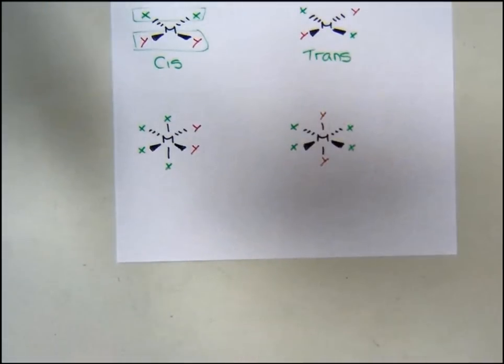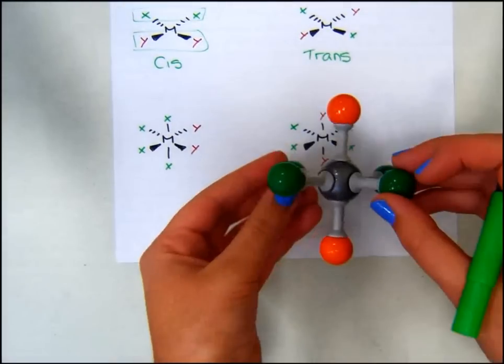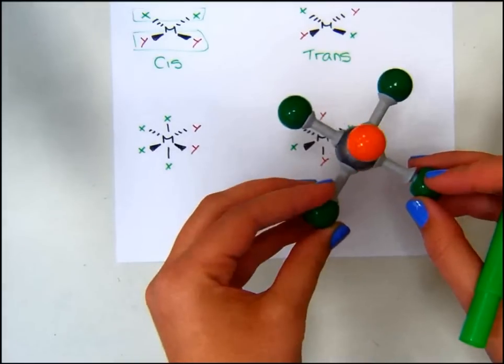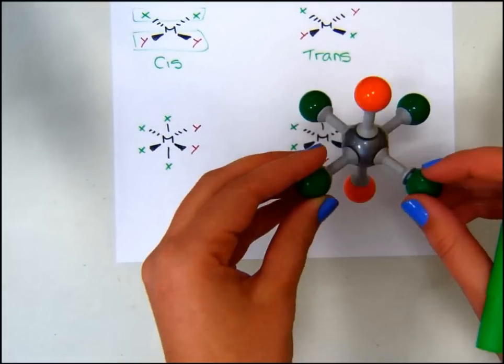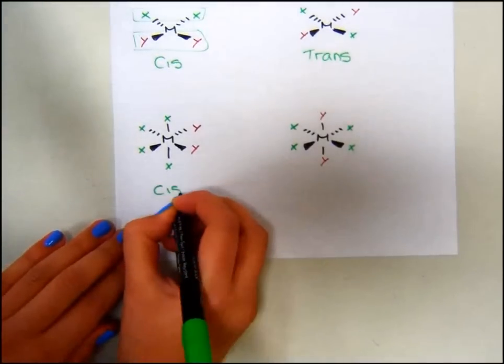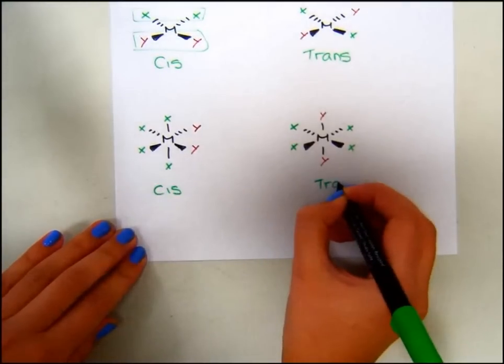Looking at the second isomer, we can see that the two Y's substituents are not on the same face. One is above, and one is below. We can label these as cis and trans.